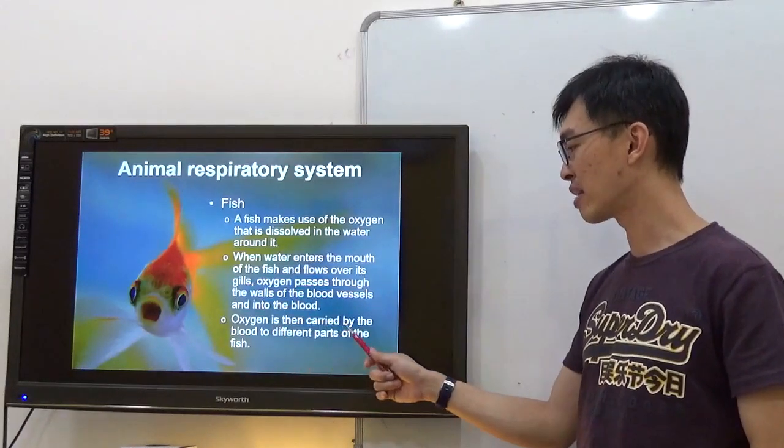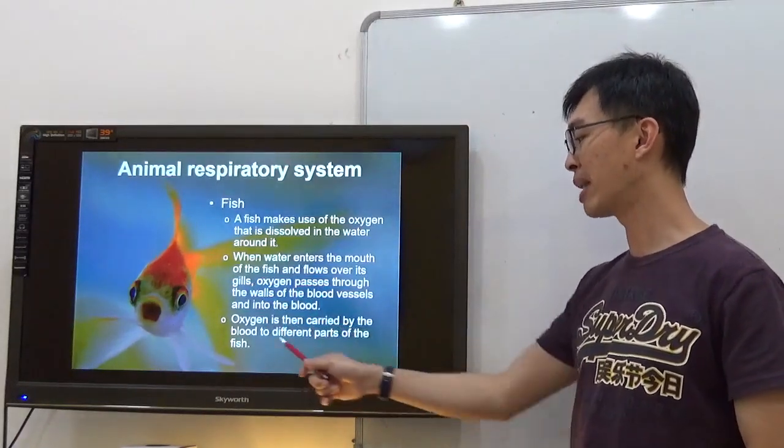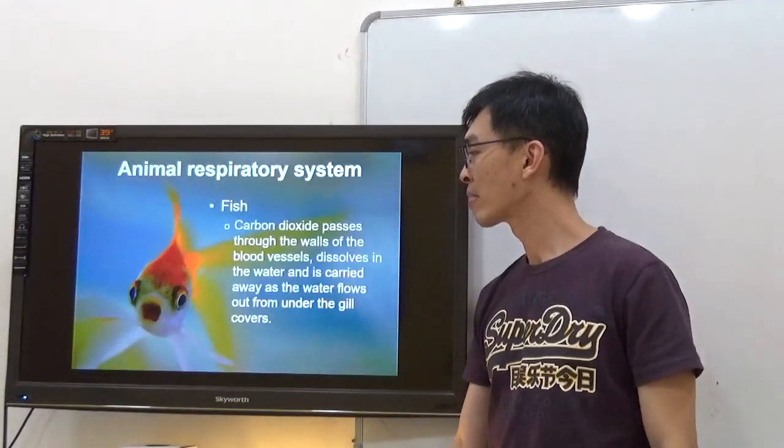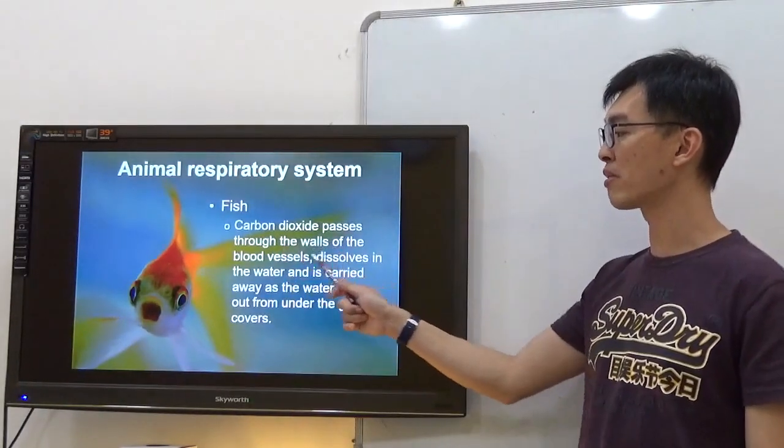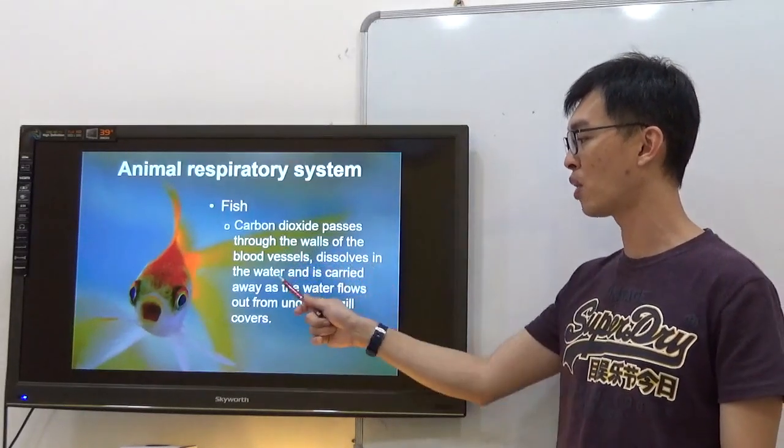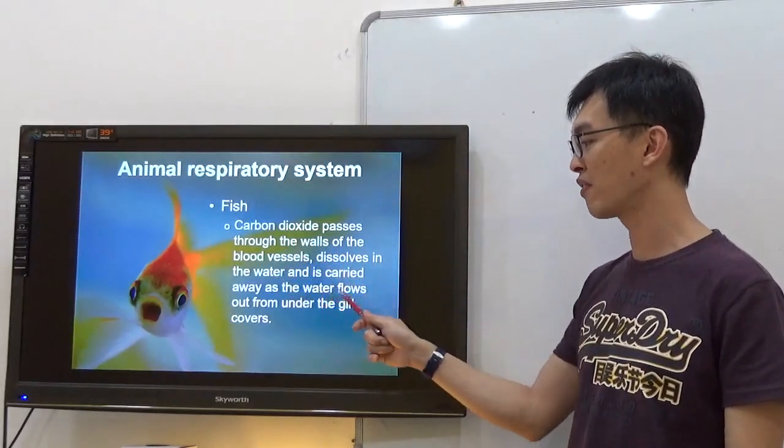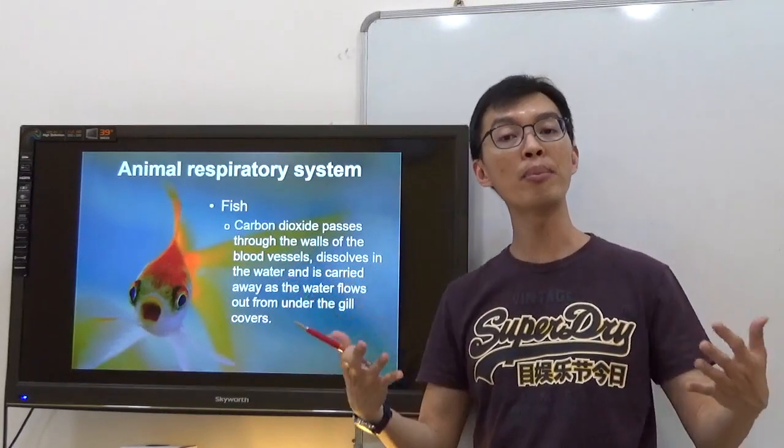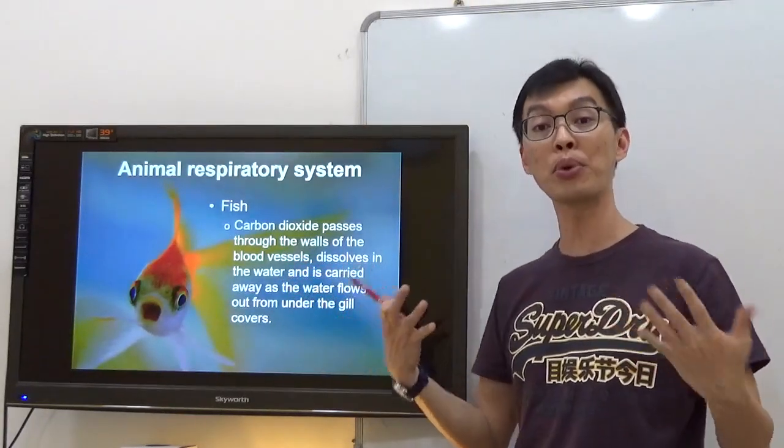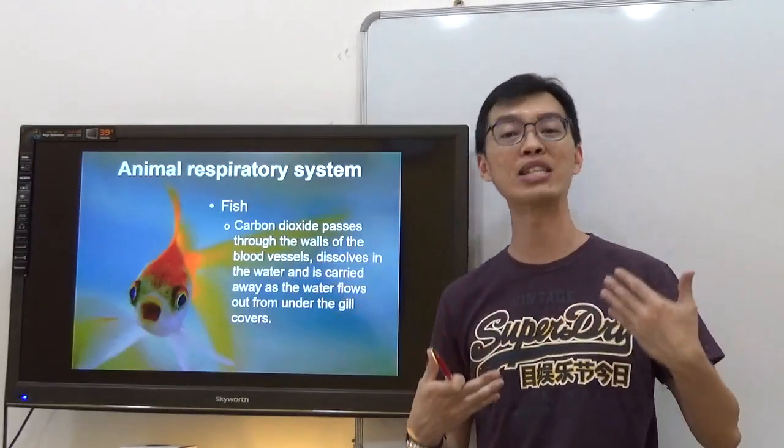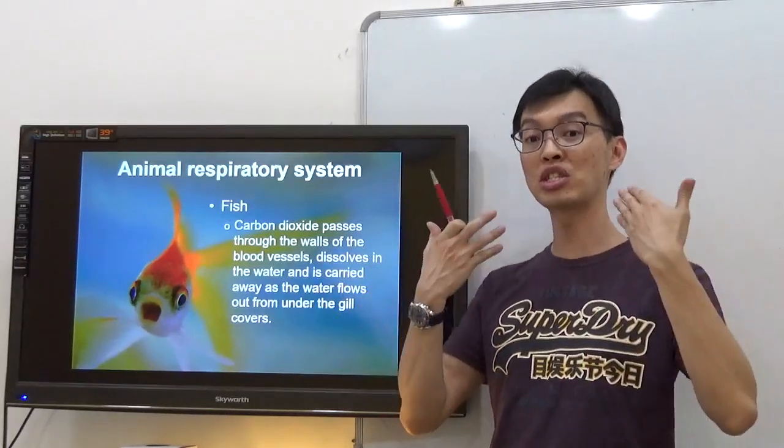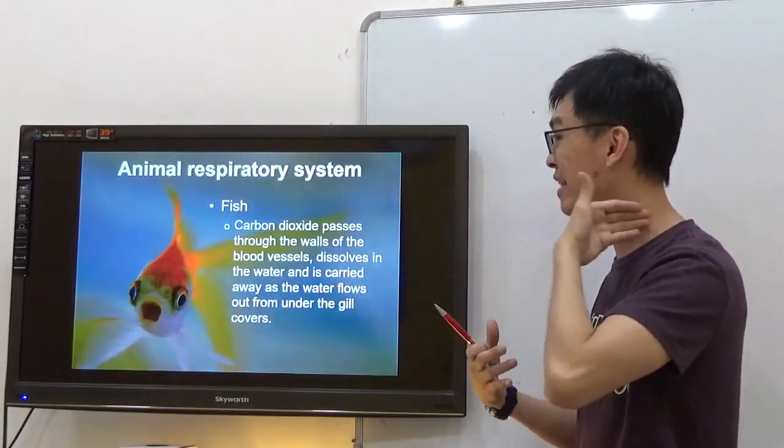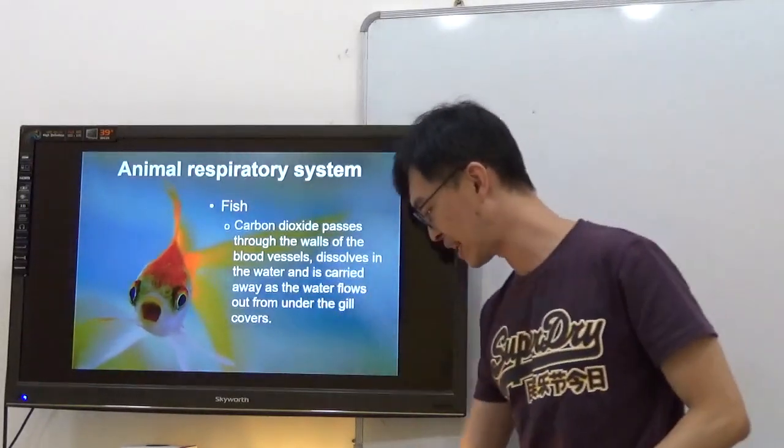Oxygen is then carried by the blood to different parts of the fish. Carbon dioxide passes through the walls of the blood vessels, dissolves in the water, and is carried away as the water flows out from under the gill covers. The moment they use up oxygen, they produce carbon dioxide like us through respiration. They take in oxygen, give out carbon dioxide, which is passed out through their gills when they breathe out.